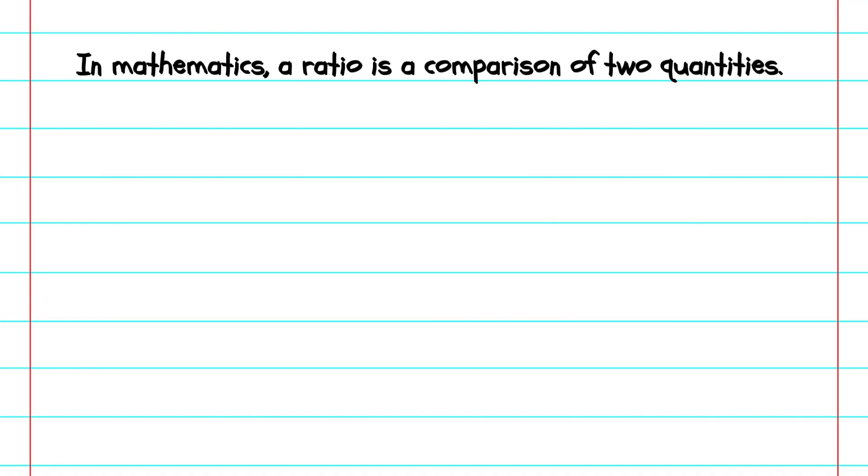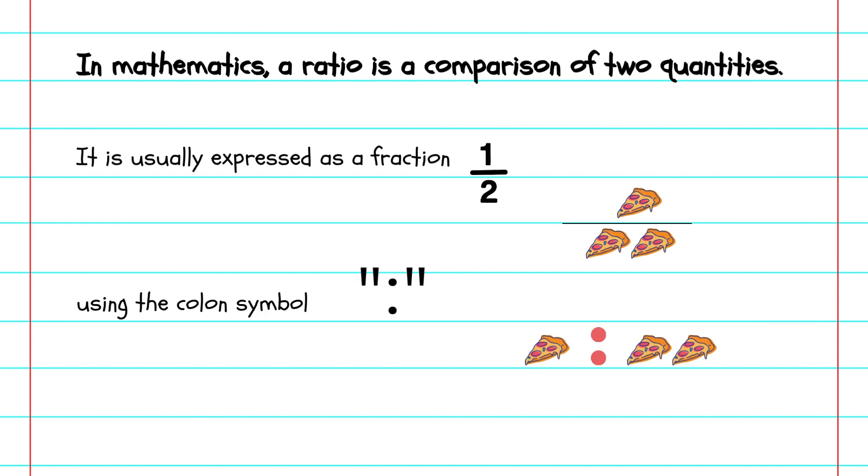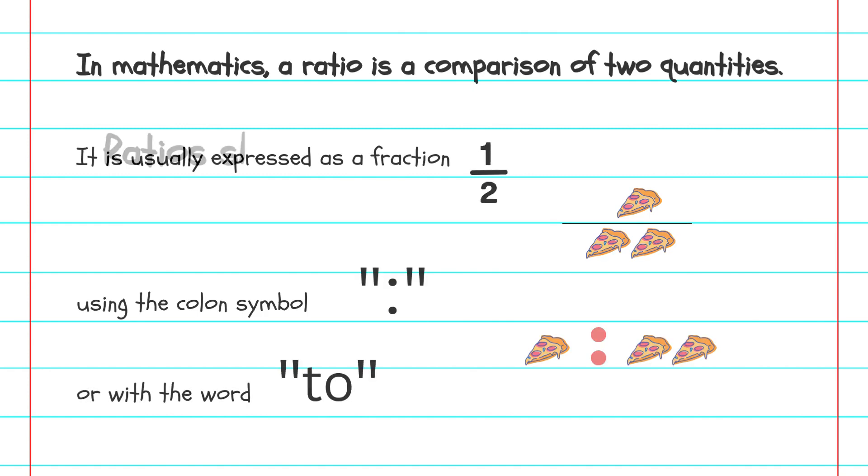What is a ratio? In mathematics, a ratio is a comparison of two quantities. It is usually expressed as a fraction, using the colon symbol or the word 'to'. Ratios show how one quantity is related to another.